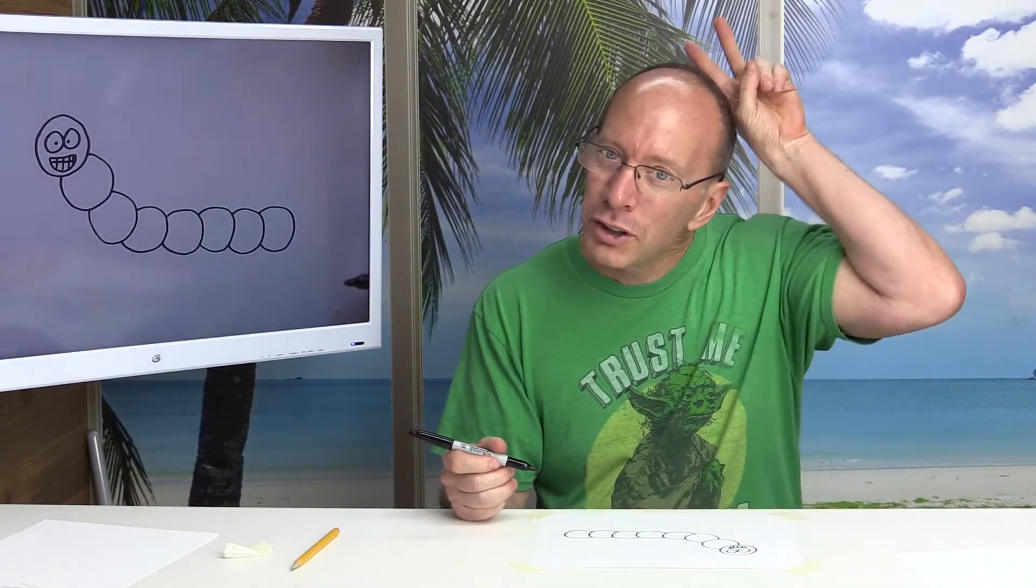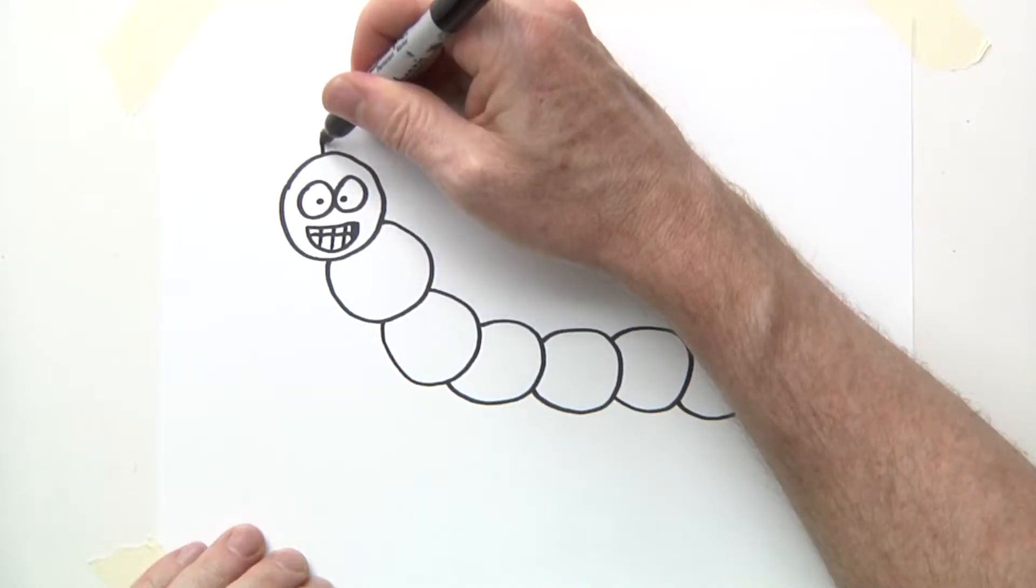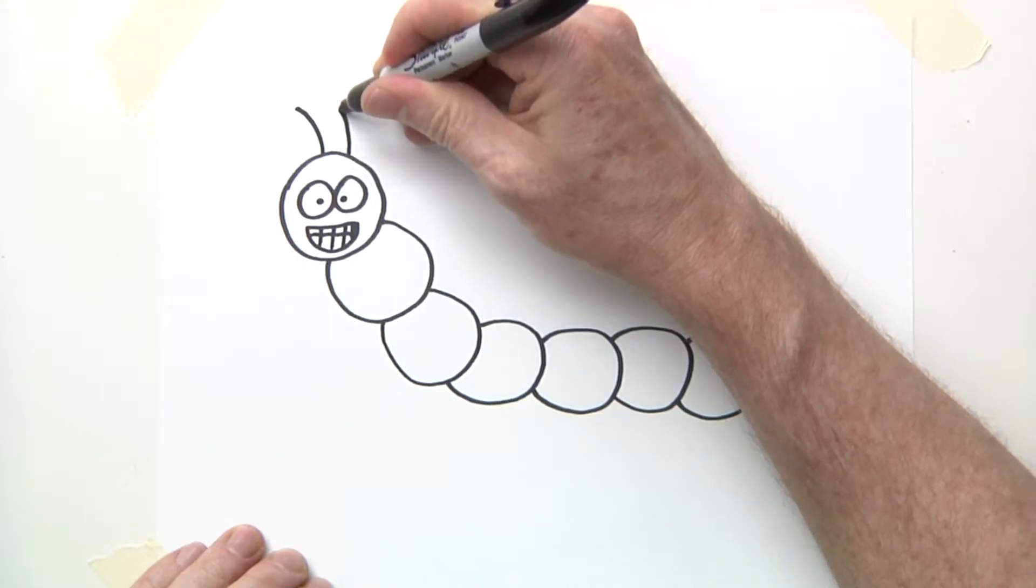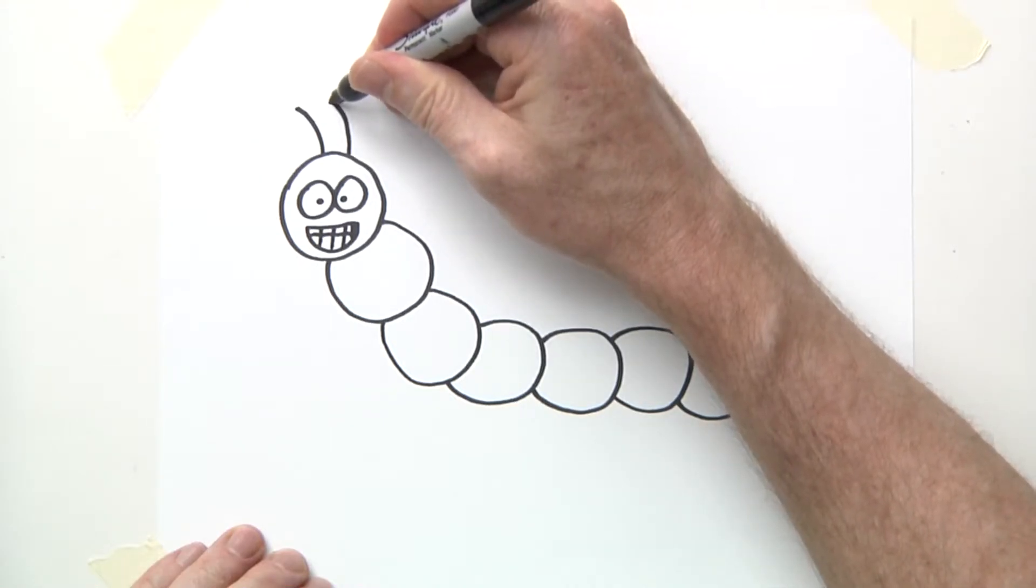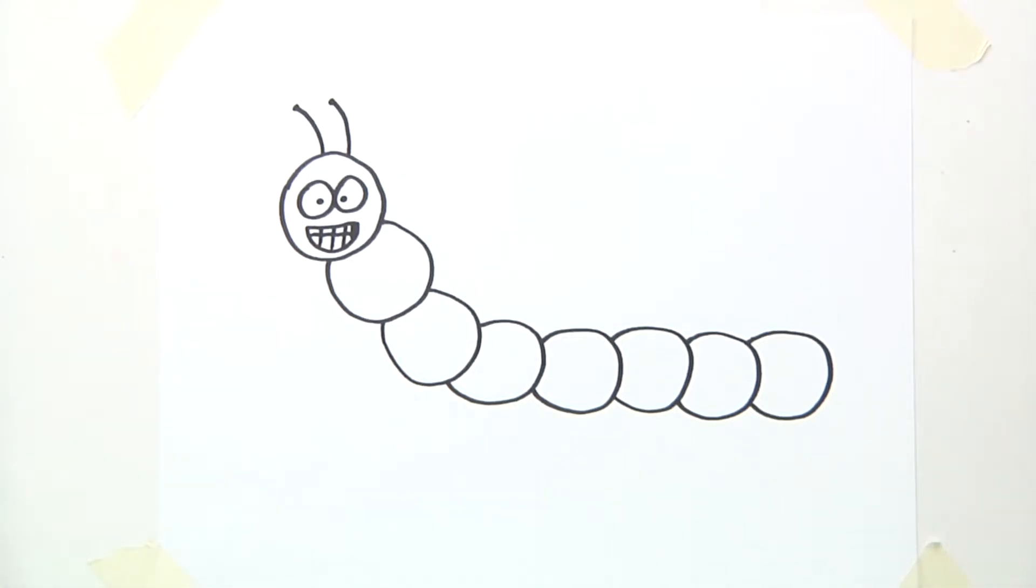And we want to put two antennas coming out of the head of the millipede. Just like that. And I just kind of put a circle right here. All right, this is looking really cool.